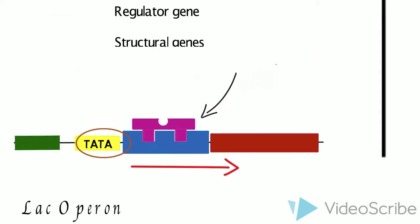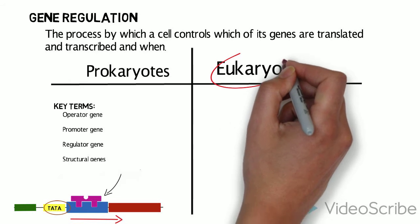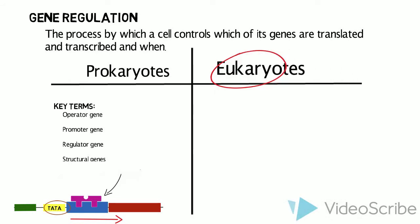That was how prokaryotes turn their genes on and off. Let's now take a quick look at eukaryotes. Eukaryotes, being much more complex organisms, have a much more intricate way of controlling their genes. There are some similarities though.